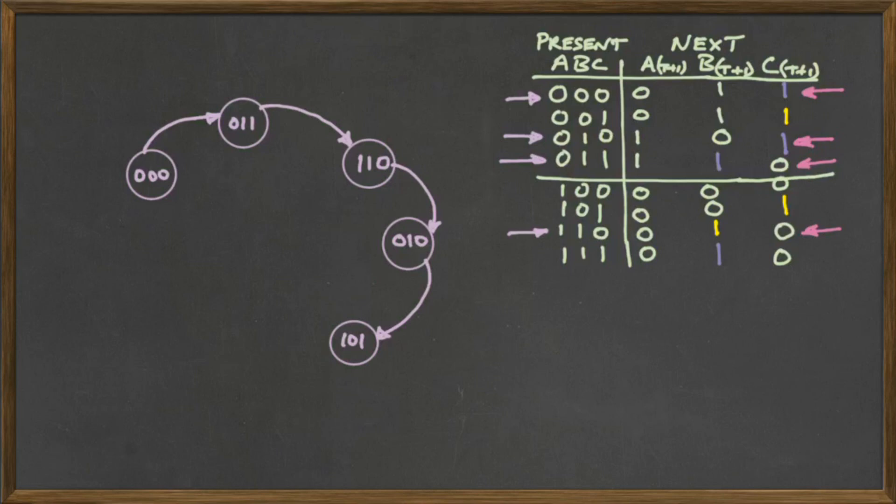Now we look at the 5 and we see that the 5 is going to 1. So we put the 5 to 1. And then we look at the 1 and we see that the 1 is going back to 3. So we simply have to put in an arrow to connect that back to 3.